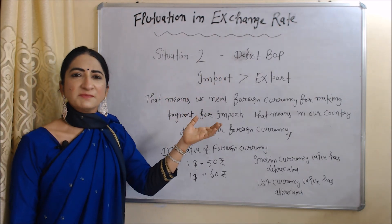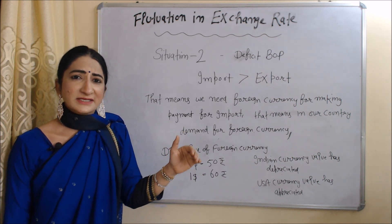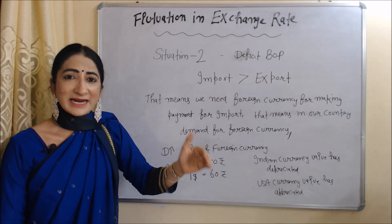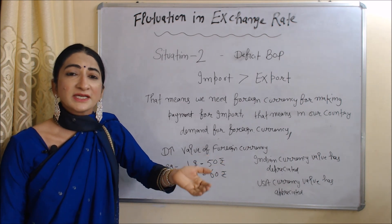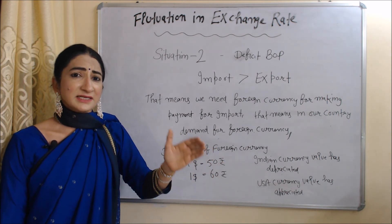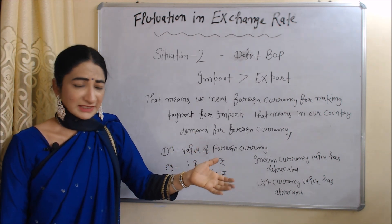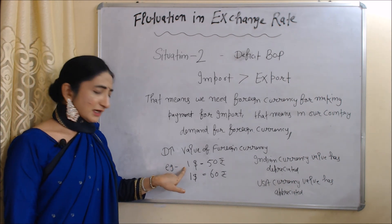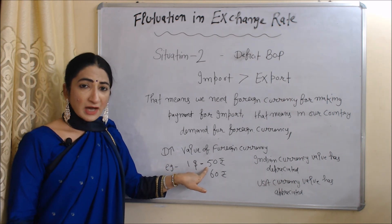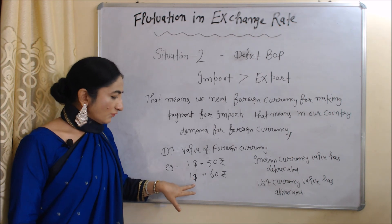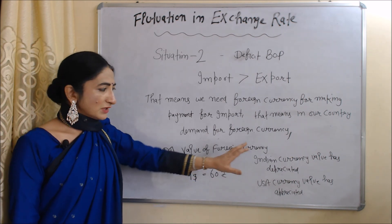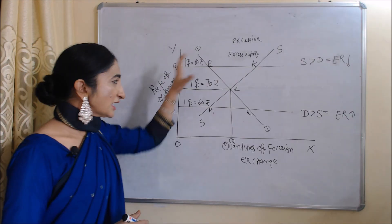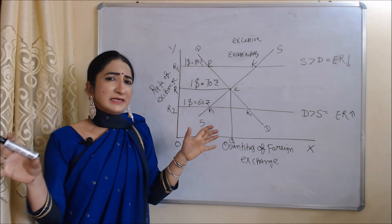Situation two: deficit balance of payment. In case of deficit balance of payment, imports are more than exports. That means we need foreign currency for making payment for our imports. As a result, demand for foreign currency will increase in our country, and as demand for foreign currency increases, the value of foreign currency will increase. For example, earlier one dollar was equal to 50 rupees; now, as dollar demand has increased, one dollar has become equal to 60 rupees. So here, Indian currency value has depreciated but USA currency value has appreciated.